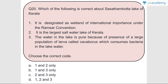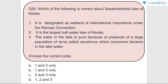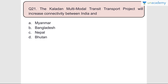Question number twenty: Which of the following is correct about Sasthamkota Lake of Kerala? Statement one - it is designated as a wetland of international importance under the Ramsar Convention - correct. Statement two - it is the world's largest saltwater lake of Kerala - wrong, it is the largest freshwater lake of Kerala. Answer is B, one and three only. The water in the lake is pure because of the presence of a large population of larvae called cowaburus which consume bacteria in the lake water.